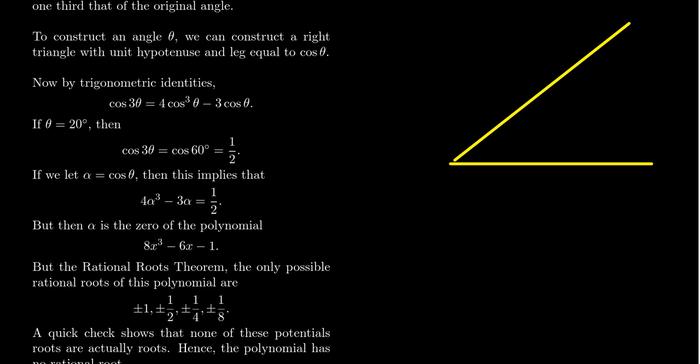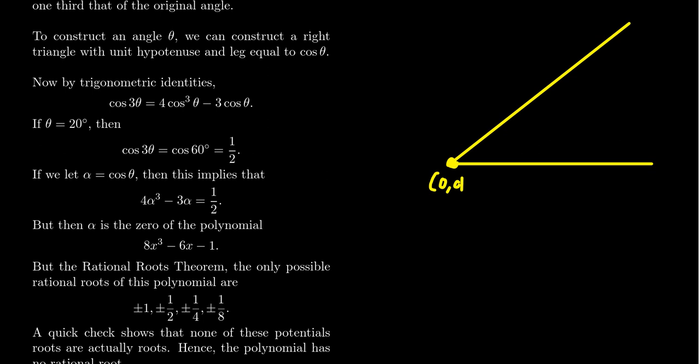And we can associate the vertex of the angle with the origin of our plane and then constructing a circle, the unit circle centered at the origin. We will then get this point of intersection, which we know from fundamental trigonometry, this point of intersection will be cosine theta comma sine theta.